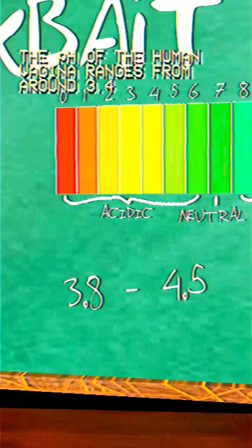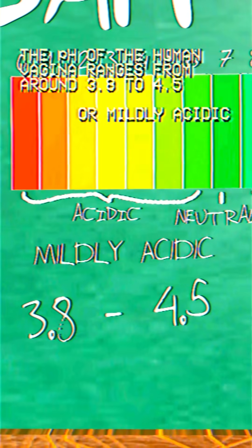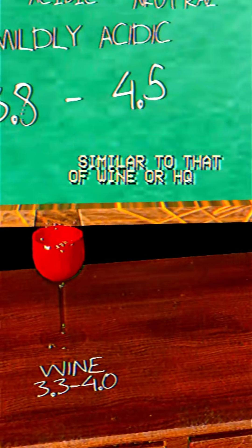The pH of the human vagina ranges from around 3.8 to 4.5, or mildly acidic, similar to that of wine or honey.